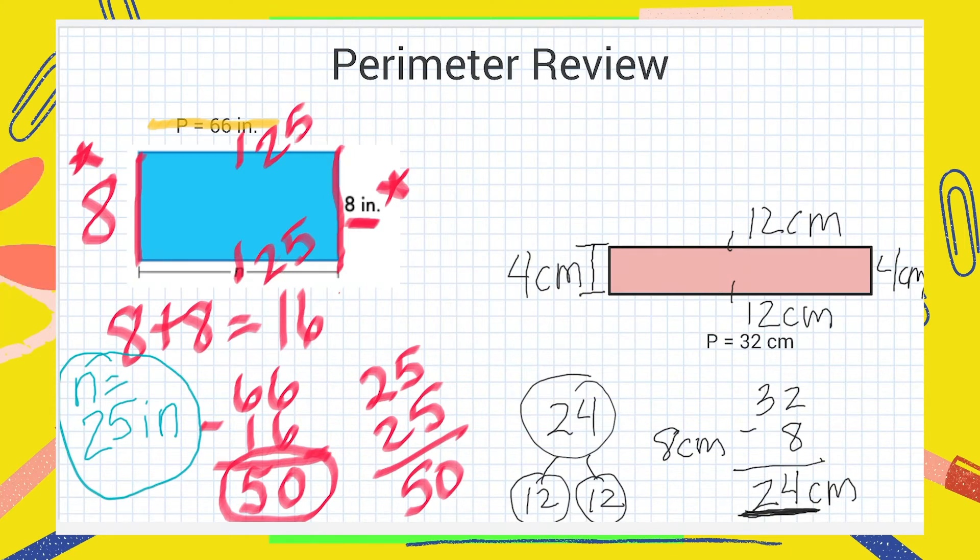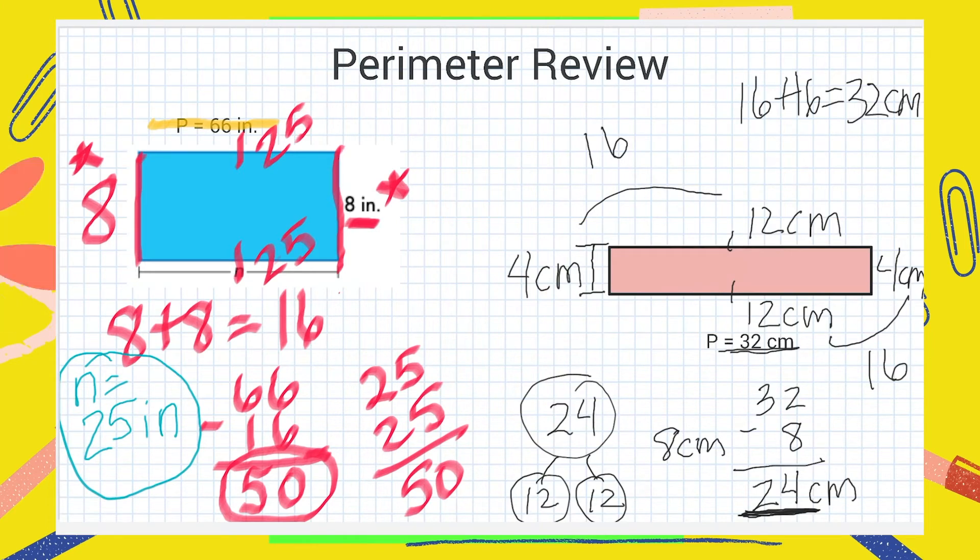Now mathematicians always take their time to check their answer. So while I'm really confident that we got the right answer I want to take a second to check. I know that the perimeter is 32 centimeters. That means the sum of all these sides must add up to be 32. Let's add them up. 12 plus 4 is 16, 12 plus 4 is also 16, 16 plus 16 equals 32 centimeters. Great job. Now let's talk about area.